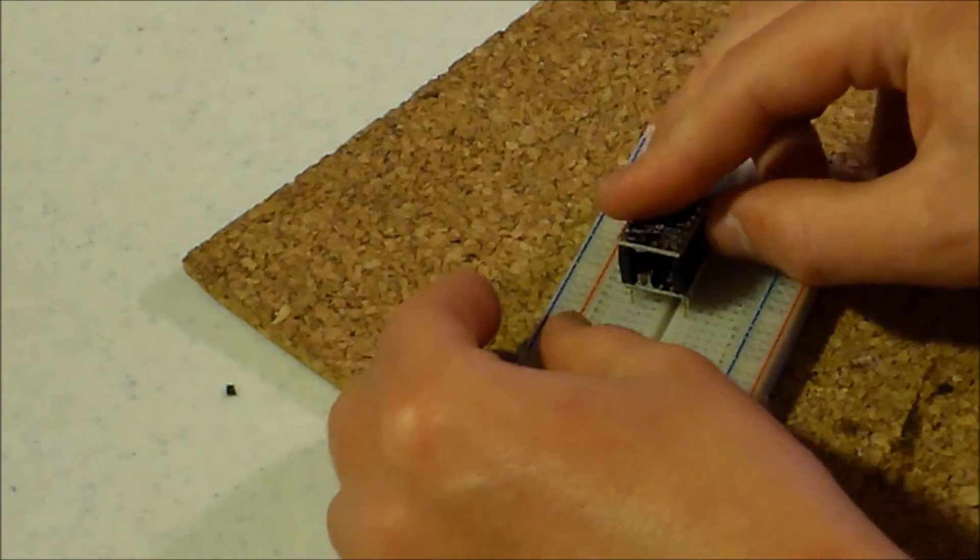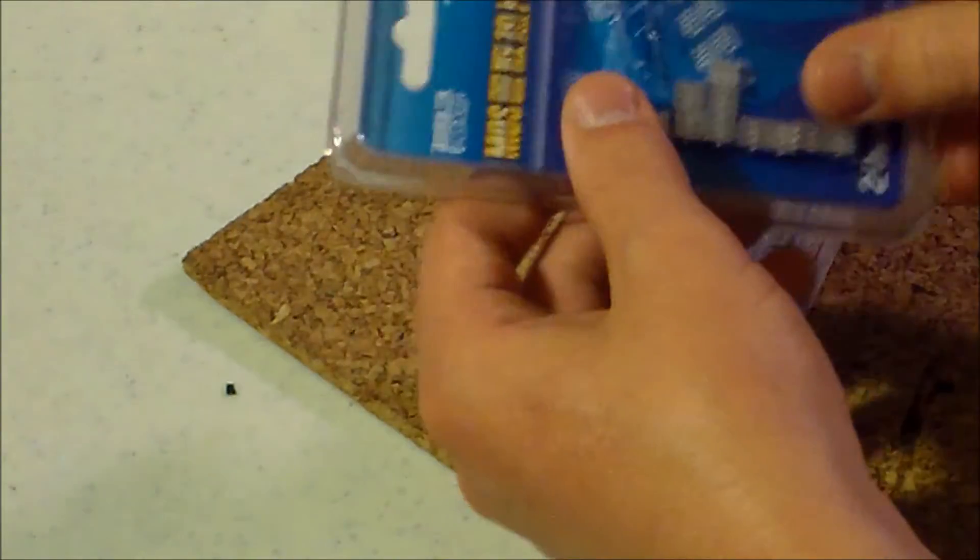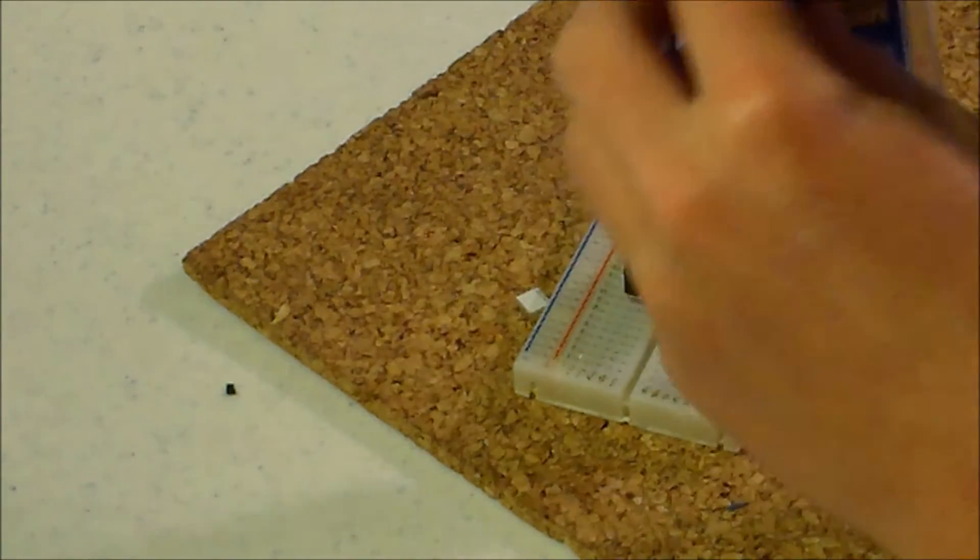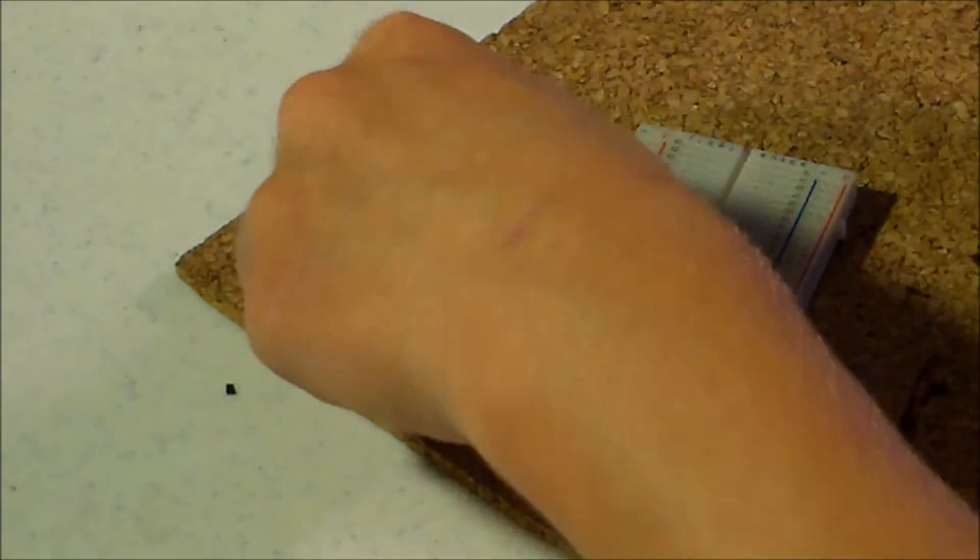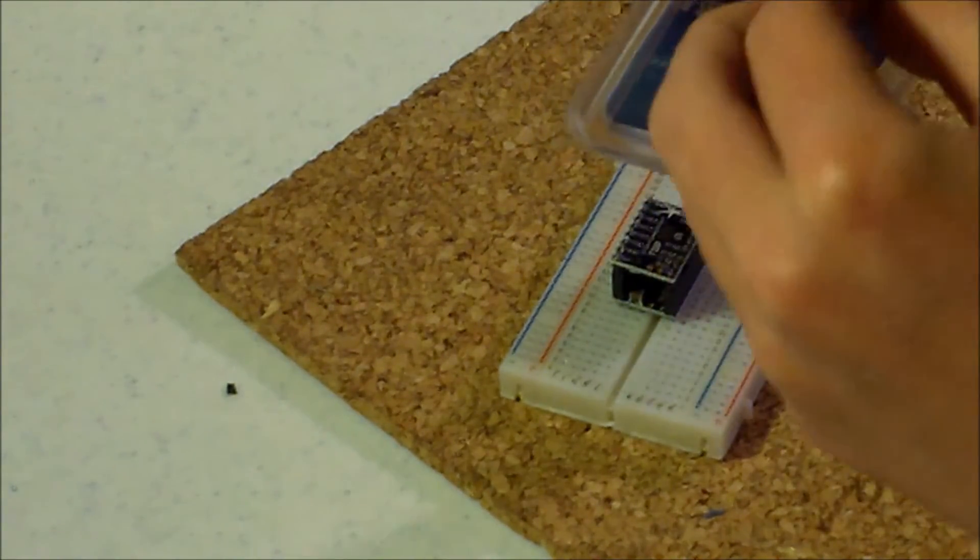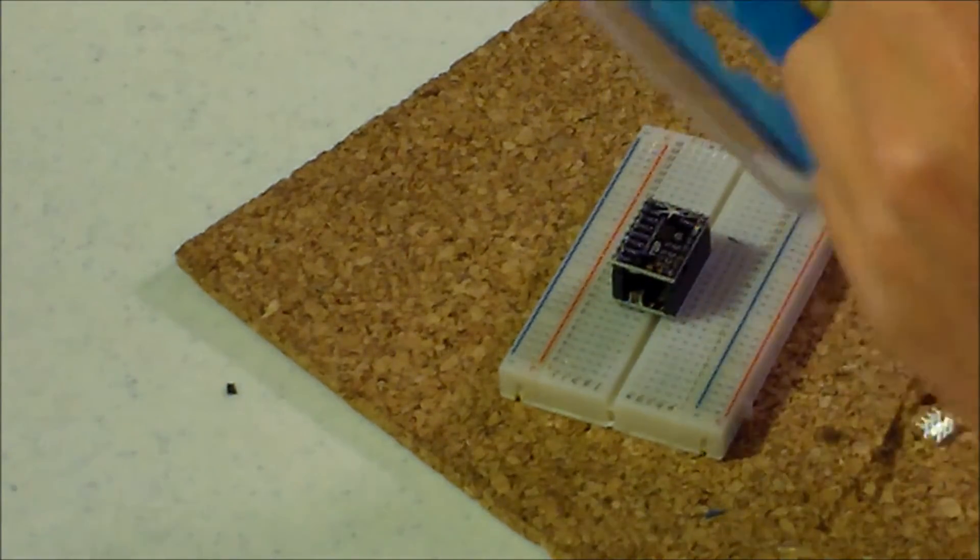And so when you install this, what you're gonna do is you're going to make sure you'll notice there's three holes. Align those three holes and you should be in business, just like that. I got these heat sinks off of Amazon. They're too small in my opinion.